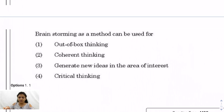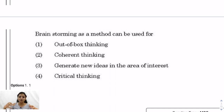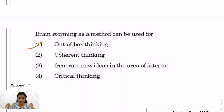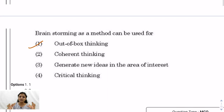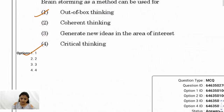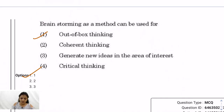Question 3: Brainstorming as a method — brainstorming mein koi ek topic diya jaata hai aur log kisi bhi direction mein us topic ke baare mein soch sakte hain, new ideas laate hain. That is out-of-the-box thinking. We don't call it critical thinking because you don't analyze what the right idea should be — you can bring the wildest ideas from any direction. So the correct answer is option 1: out-of-the-box thinking.